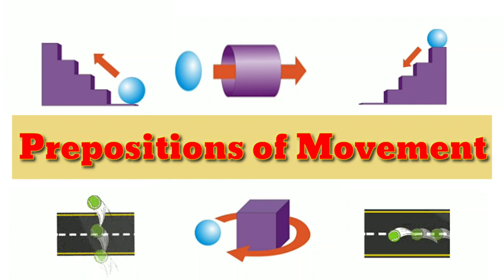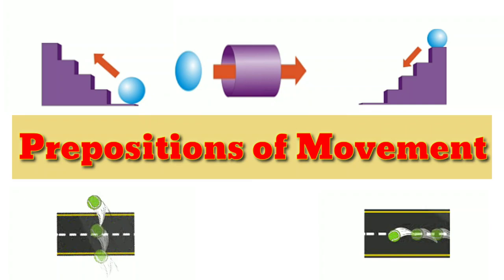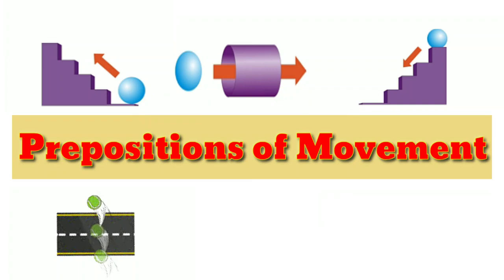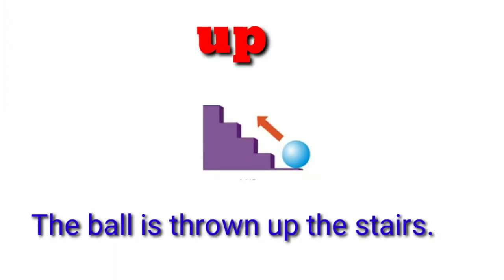Prepositions of movement. That is, one object moving in a direction — prepositions that describe the direction of movement. These are prepositions of movement. First: up.